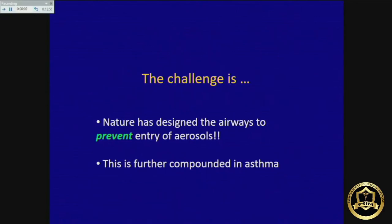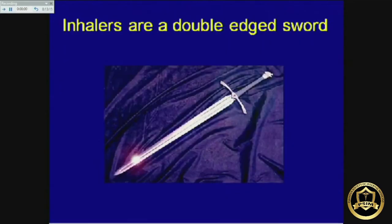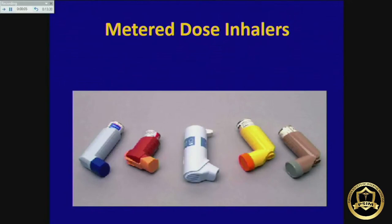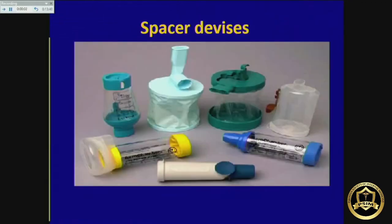In respiratory disease there are challenges with inhaler use because nature wants to prevent anything going into the airway — your nose is angled, there are hairs in your nostrils, turbinates, epiglottis, and glottis all trying to prevent entry. Metered-dose inhalers are designed to circumvent these issues and deliver medicine directly into the airway. However, it is a double-edged sword: taken correctly, you get the desirable effect; taken incorrectly, you get no effect whatsoever, and patients lose faith in inhalers.